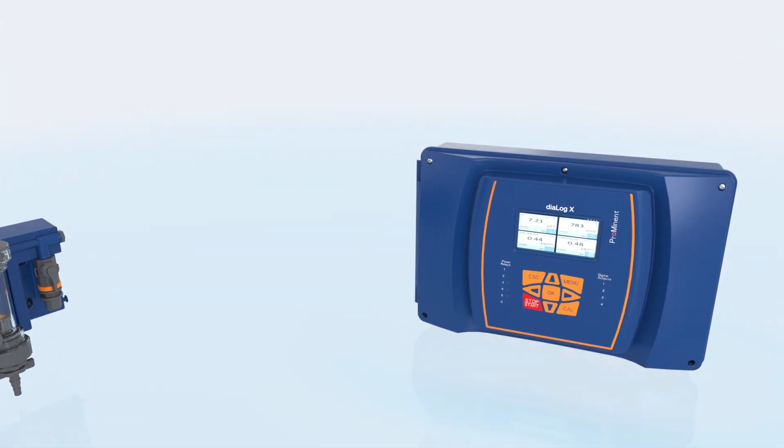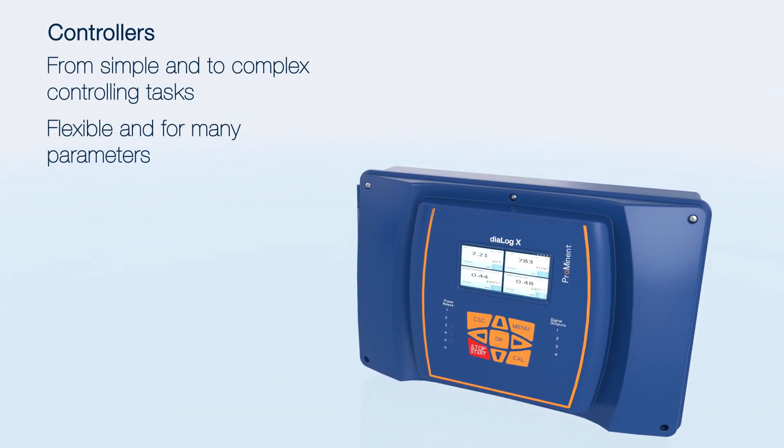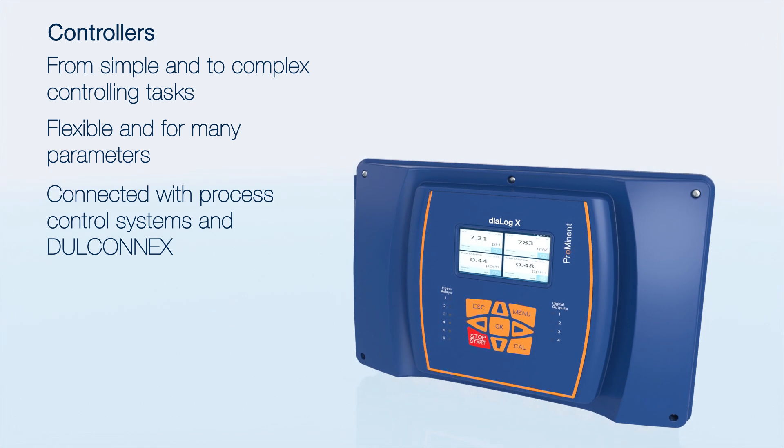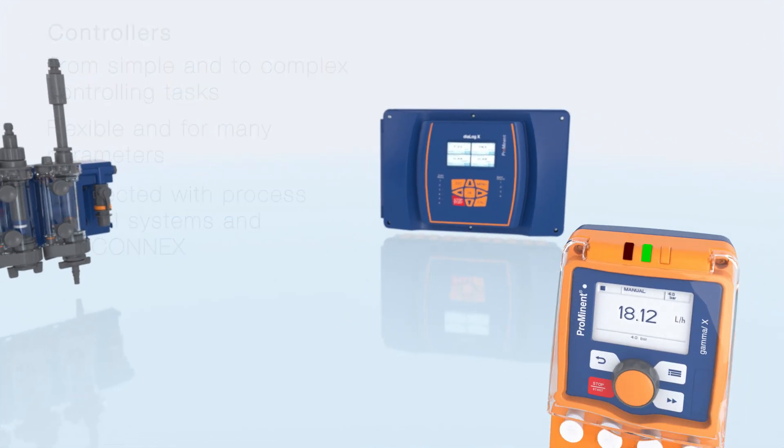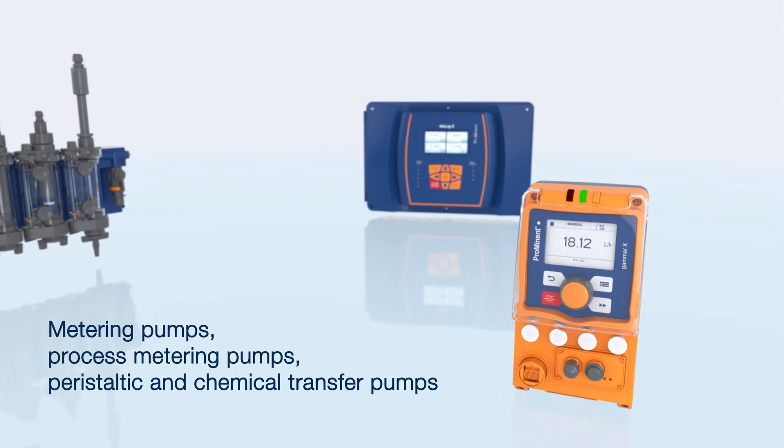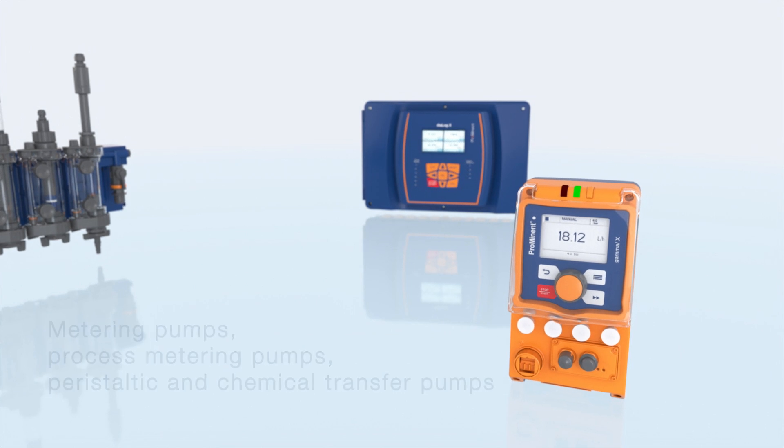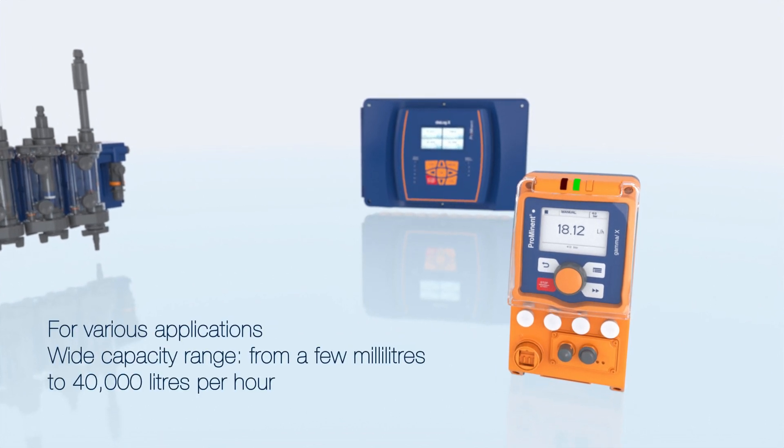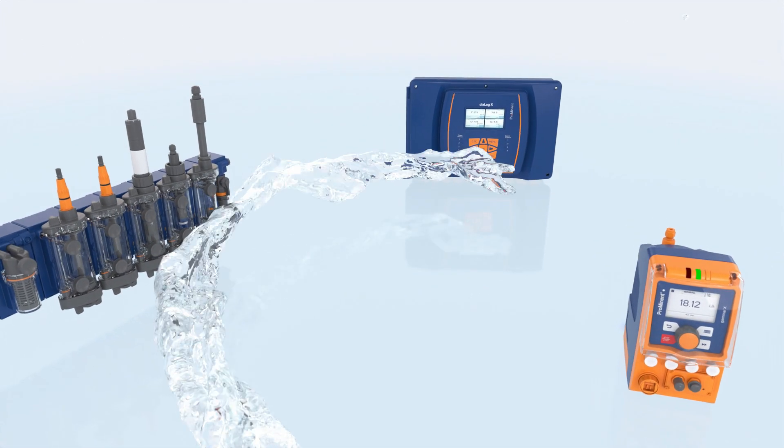ProMinent controllers enable precise regulation and control of processes that are technically customized to your specific applications. They control ProMinent metering pumps to dose only the required quantity of chemicals. This completes a control circuit that is the basis for fluid management.